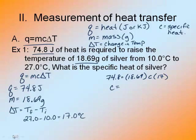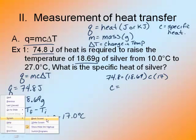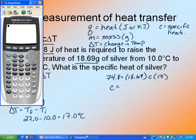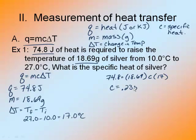74.8 equals 18.69 times C times 17. Multiply your 18.69 times your 17 and divide both sides by the variables. So I'm going to pull out my handy dandy calculator, and I'm going to say 74.8 divided by, parentheses are your friend, 18.69 times 17, enter, is 0.235. Now, the units on C are a little bit funky. Think about it. It was the heat, joules, divided by the mass, grams, times the temperature change, which is degrees Celsius. So it's joules per gram degrees Celsius. And this is my answer.